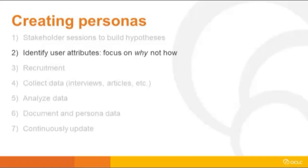Once you've identified those user attributes and figured out the why you want to know, you write up your interview script or your protocol of how you're going to do it - that depends on how you want to go about collecting your data. You've got to start thinking about how you're going to talk to these users, patrons, and administrators. You don't want secondhand knowledge or to play telephone with data. You want to talk to the real people who are going to be affected, so you've got to start recruiting them.